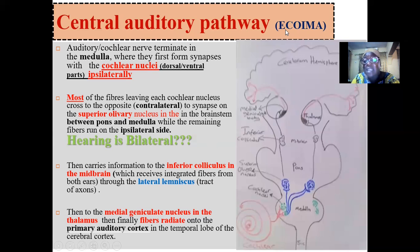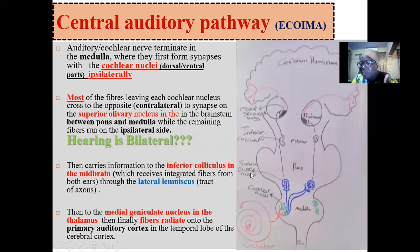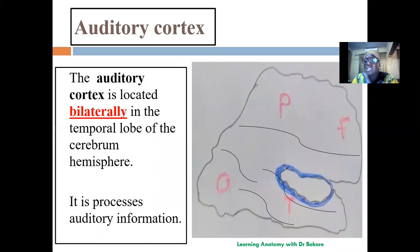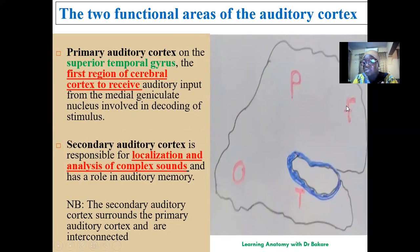There is an acronym to remember the central auditory pathway: EQUAIMA. E is the eighth cranial nerve — the vestibulocochlear nerve. C is the cochlear nuclei. O is the olivary nucleus — specifically the superior olivary nucleus. I is the inferior colliculus. M is the medial geniculate nucleus. A is the auditory cortex.